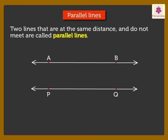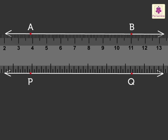Kids, look here. Two lines drawn on either side of a ruler are parallel lines.